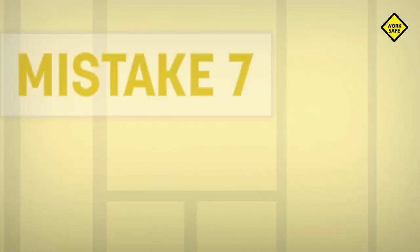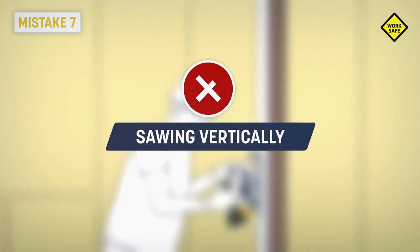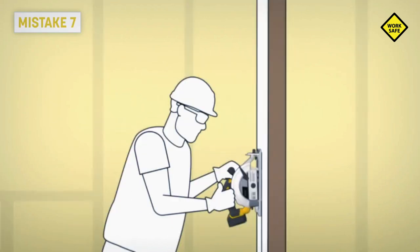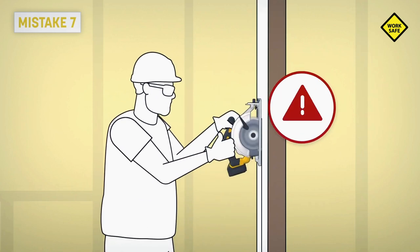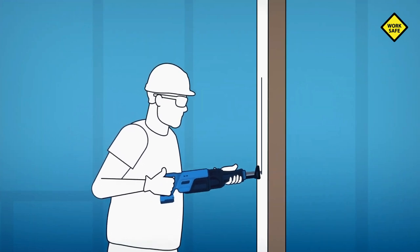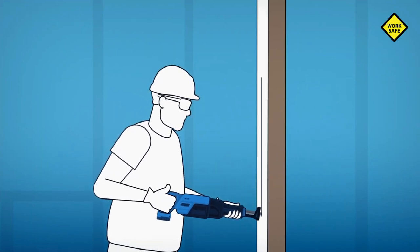Mistake 7: Sawing vertically. Even if it's tempting, you can't substitute a tool for another to save time. When you need to cut a vertical surface, use a reciprocating saw.